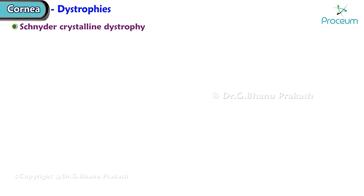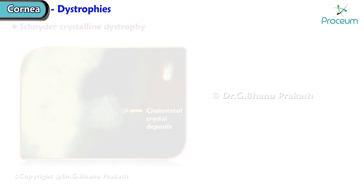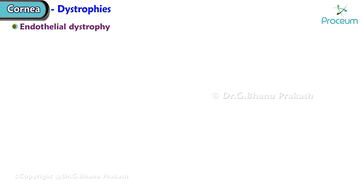Schnyder crystalline dystrophy shows cholesterol crystal deposits. The most common type of endothelial dystrophy is Fuchs endothelial dystrophy.